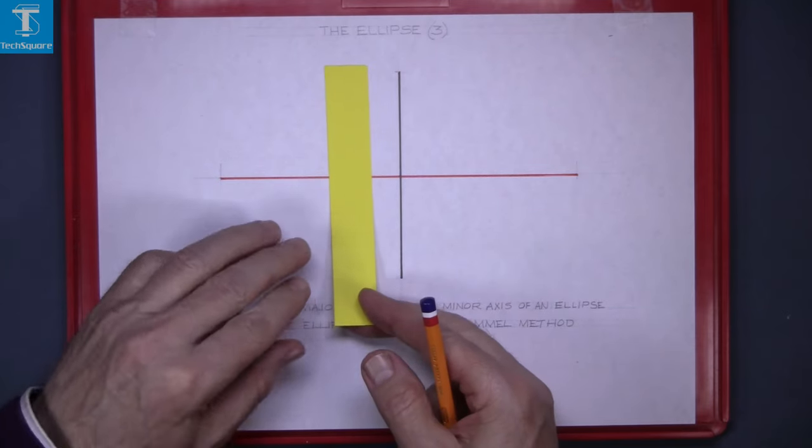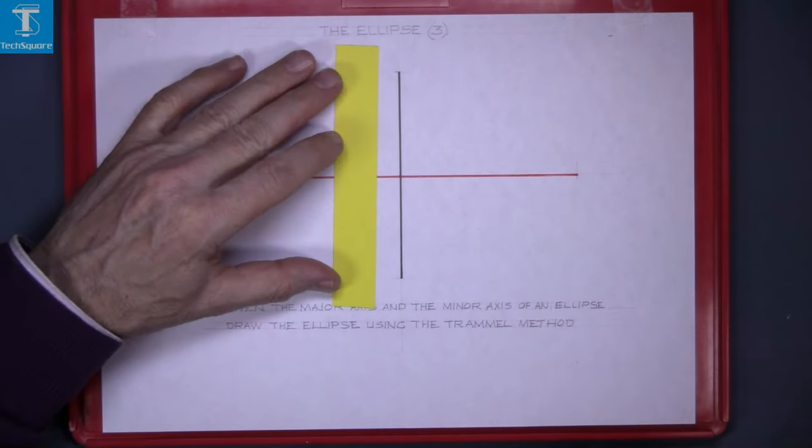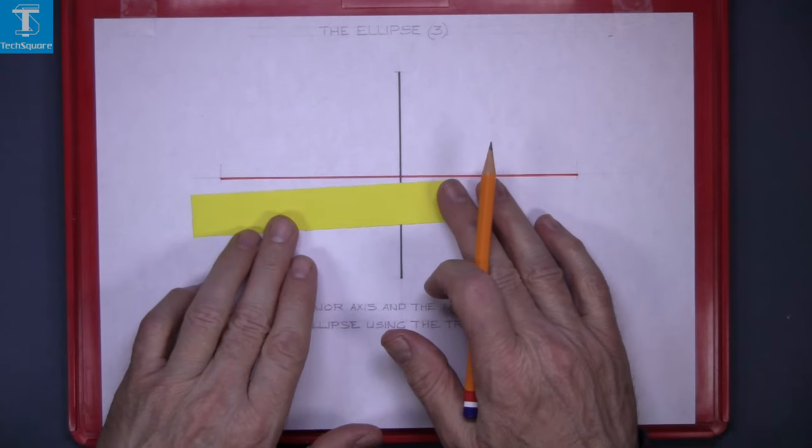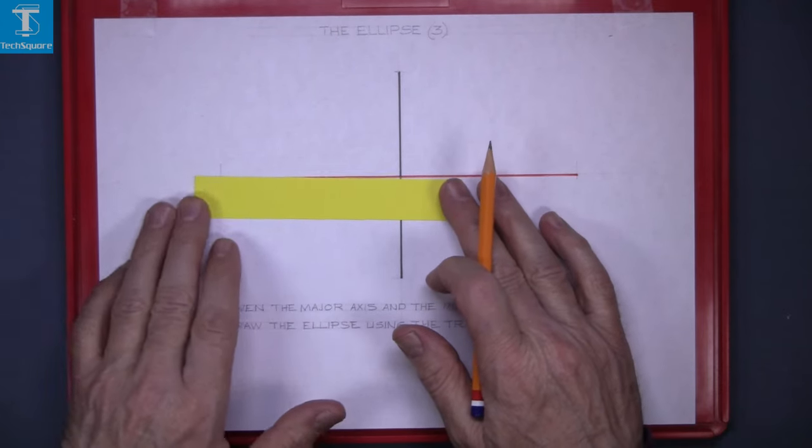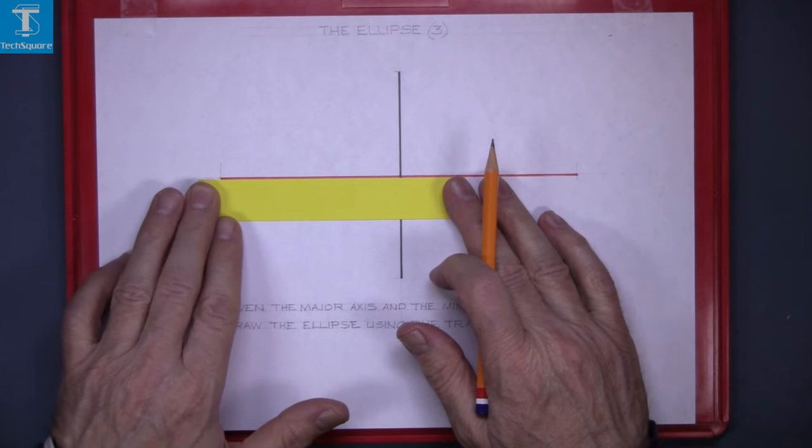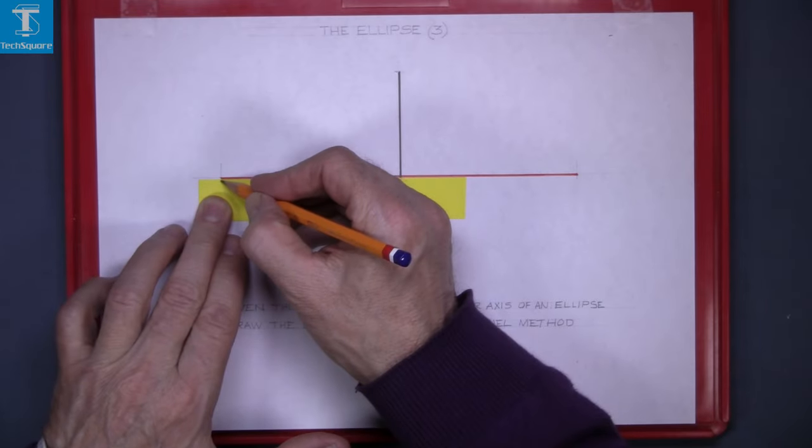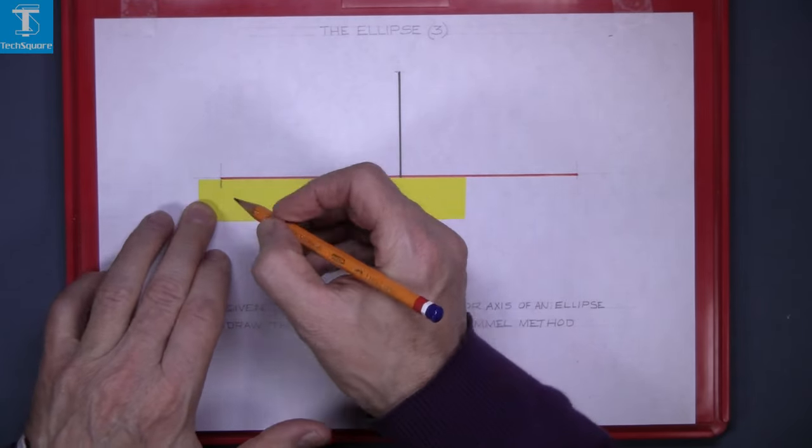A trammel refers to a piece of paper like this. So you lay it along one of the axes, along the major axis here. We mark the end point here and mark P there.